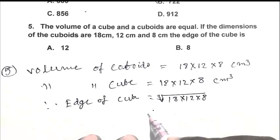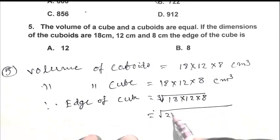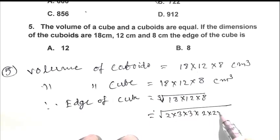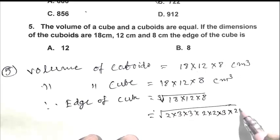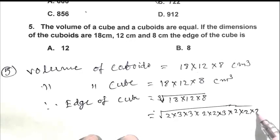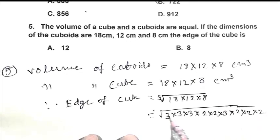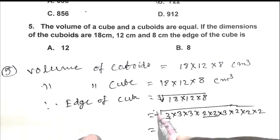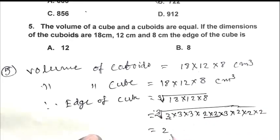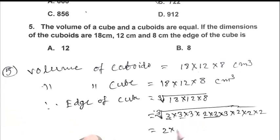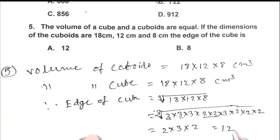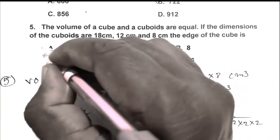So friend, we can write it 2, 3, 3, 2, 2 multiplied by 3 and 8, 2 multiplied by 2, multiplied by 2. So friend, this 3, 2 we can 1, 2, 3 and 2. So 12. So friend, A is the right answer.